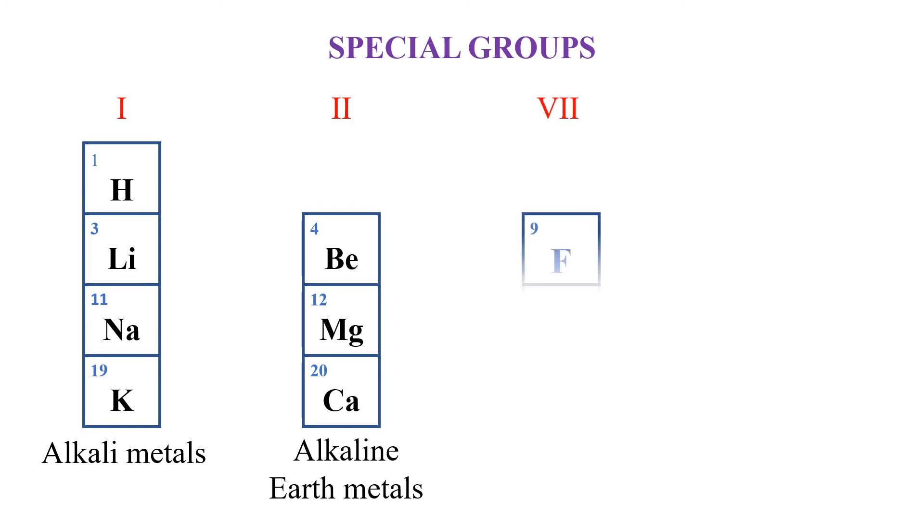We also have group 7 elements, fluorine, chlorine, and others, known as halogens, because they can easily form salts when they react with metals. These ones are also highly reactive, and they are diatomic in nature.